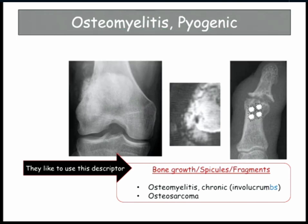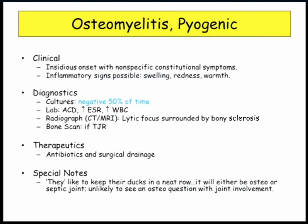Clinically, osteomyelitis has an insidious onset with nonspecific symptoms — you've got to go looking for it. Patients don't come in saying their hip or knee hurts; they just don't feel well, maybe with some risk factors. They may have inflammatory signs in and around the joint. Diagnostic cultures are often negative, and labs are nonspecific: anemia of chronic disease, high sed rate, maybe a high white count. On radiograph, a lytic focus is surrounded by bony sclerosis, and a bone scan will find a hot focus if you can't find it on plain radiograph.